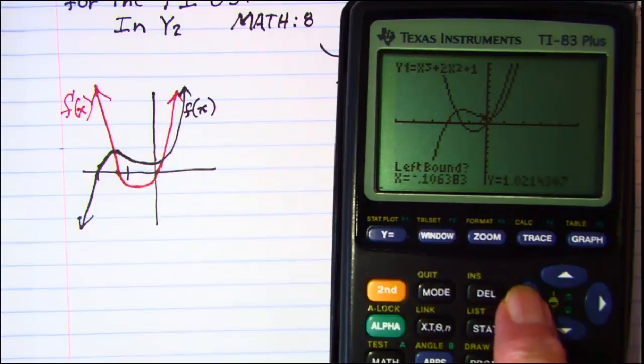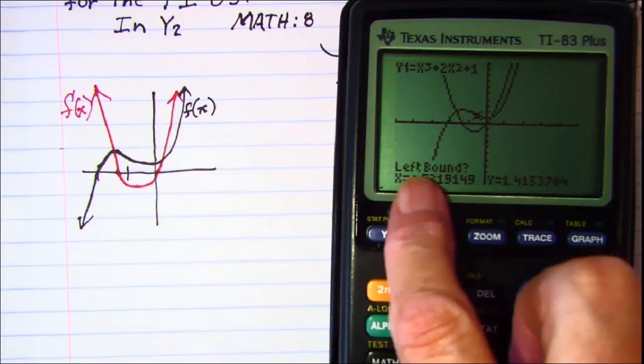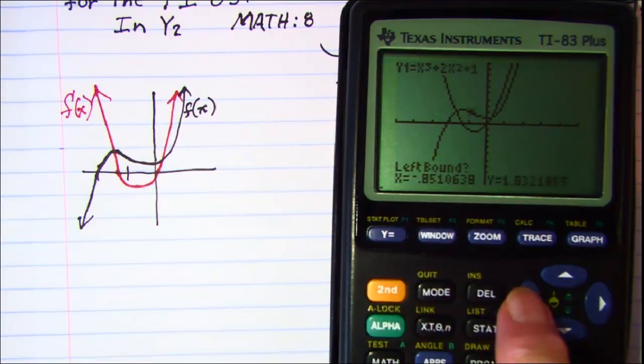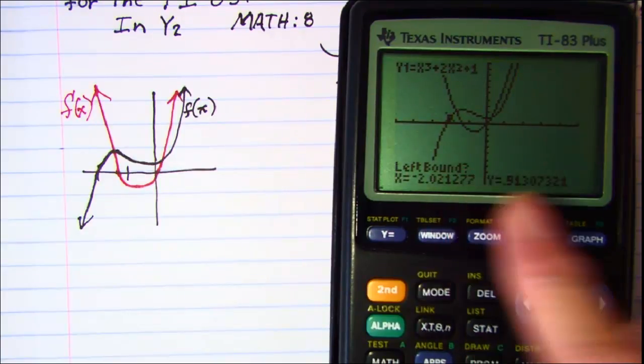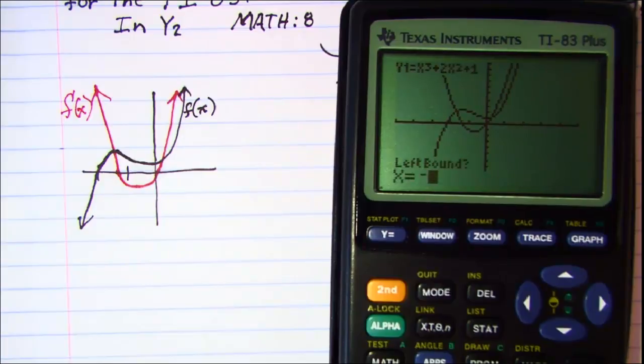And I want to go to a left bound. Now you'll see what they're asking for right here. So you can either move your cursor or you can put an x value in. So we could put negative 2 in, just by entering negative 2 as our left bound.